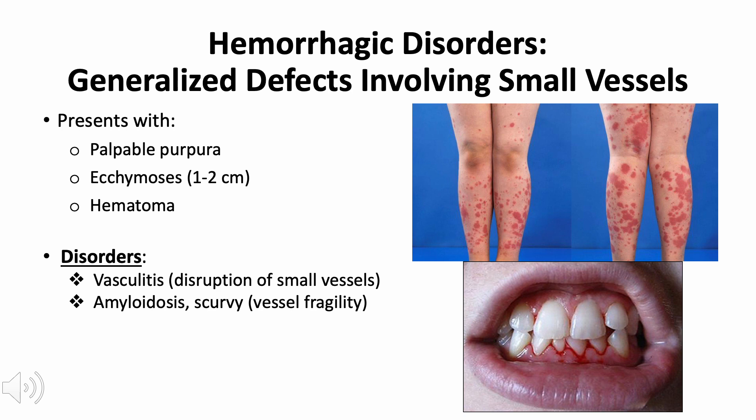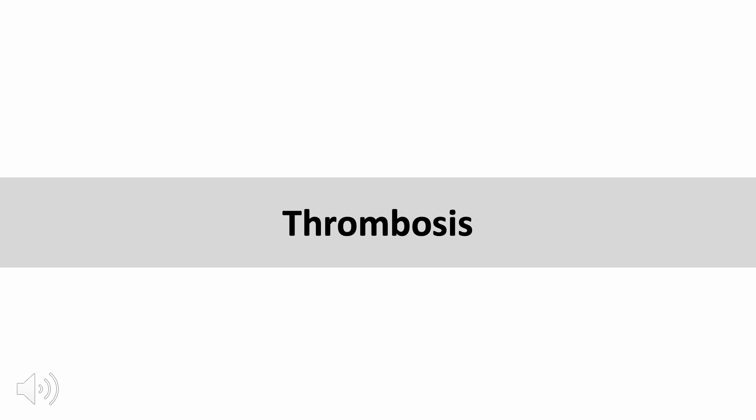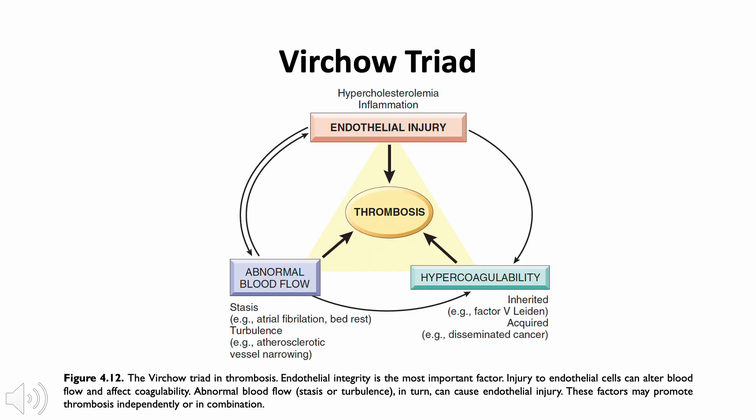The next lesson is thrombosis, which happens when there is excessive clotting. To properly understand thrombosis, we need to recognize the factors that predispose an individual to thrombus formation - simplistically presented by Virchow's triad, wherein the primary abnormalities are endothelial injury, abnormal blood flow, and hypercoagulability of the blood.